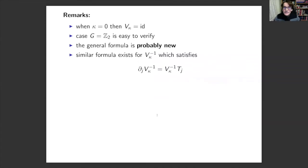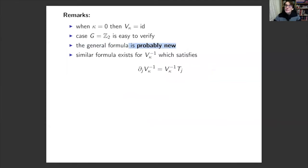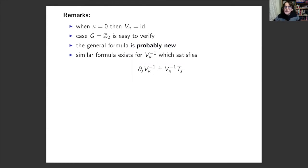Some remarks: when kappa is zero, this formula immediately gives the identity. The one-dimensional case is easy to verify. We think the general formula is new, though we are not sure. You can also write down a similar formula for V_kappa inverse satisfying the intertwining properties — this is also in our paper, and in Dunkl's original paper there is yet another expression resembling a Taylor expansion.